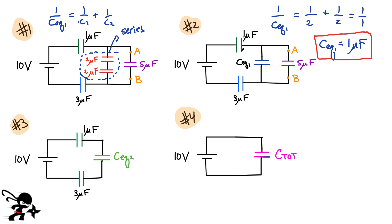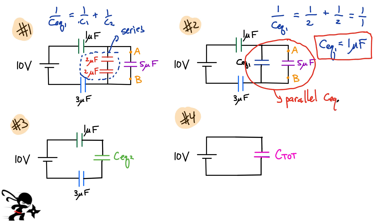The next thing I want to do is go from circuit two to circuit three. I want to combine everything in this region and call it C equivalent two. C equivalent two involves two capacitors that are in parallel. For capacitors in parallel, you simply add their values. So C equivalent two equals one microfarad plus five microfarad, giving an equivalent six microfarad capacitor.